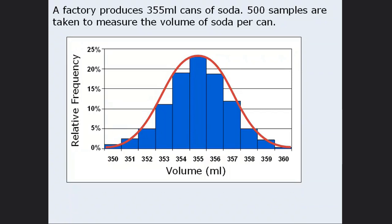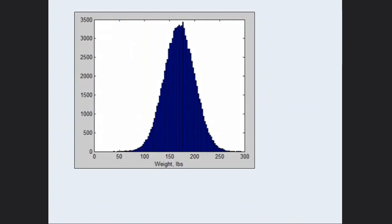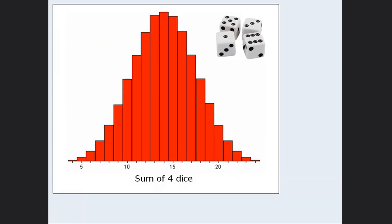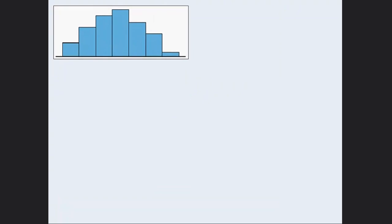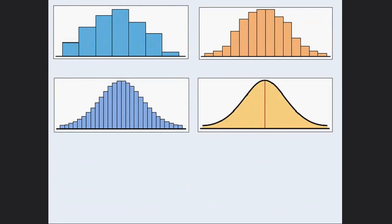This bell shape often occurs in real life. For example, here's the distribution of the weights of babies born in Norway from 1992 to 1998, and the distribution of weights of males living in a certain country. Here are also the results when we roll four dice 10,000 times and record the sum of each roll. When histograms have this bell shape, the greater the population, the less jagged the bell becomes, until it becomes closer to a perfectly smooth distribution. We call this the normal distribution. Although most real-life populations don't have such a perfect distribution, many are close enough to be considered normal distributions.